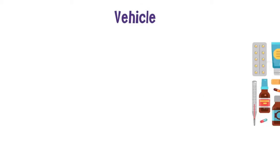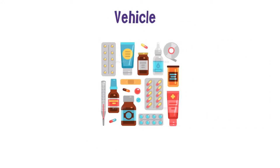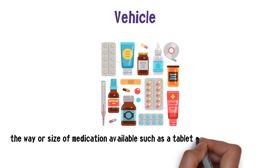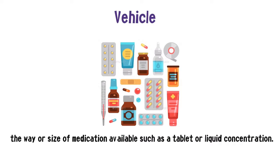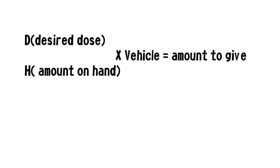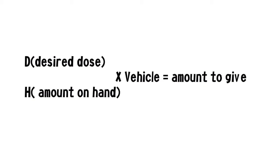Another term is dose — this tells us how much of the medication is being administered. And another term is vehicle, which is the way or form the medication is available, such as a tablet or a liquid concentration. Next, let's look at the formula.